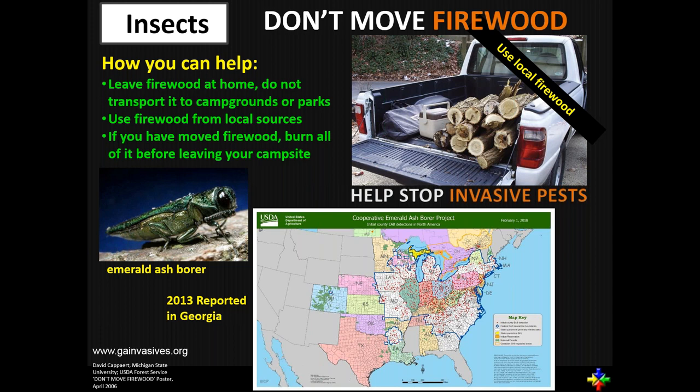Unfortunately, things like firewood can move them very quickly over many miles. We're nice folks — if we go camping, we'll throw some firewood in the back of the truck. You had a tree that died and don't want it to go to waste, so you cut it up for firewood. When you're done camping, you've got a few pieces left and offer them to the camper next to you. In the matter of a couple of days, it could travel 500 to 1,000 miles. That's how these species have spread so quickly over such a long distance.